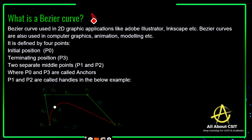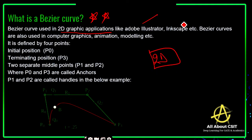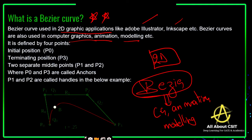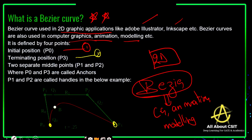Now coming to the Bezier curve, which is very important. Bezier curves are used in 2D graphics applications generally — like Adobe Illustrator, Inkscape, etc. Bezier curves are also used in computer graphics for animations and modeling. The Bezier curve is defined by four points. The first point is the initial position — in this diagram this is the initial position P0 — and the terminating position is another point.